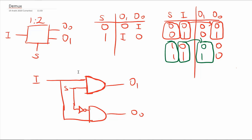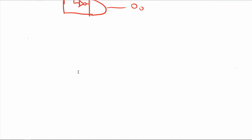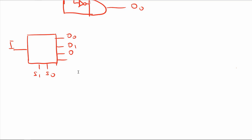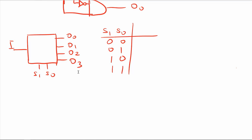Similarly, we can design a 1-to-4 D-mux. In this case, I will have two select lines S1 and S0, one input I, and four outputs: output 0, output 1, output 2, and output 3. Looking at the functionality table, we have two select lines with four possible combinations, producing four outputs.